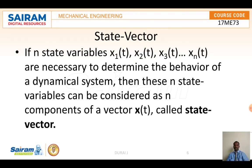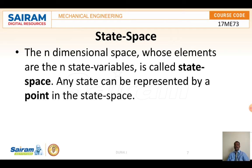Next is the state vector. If state variables x1(t), x2(t), x3(t) up to xn(t) are necessary to determine the behavior of a dynamical system, then these n state variables can be considered as components of a vector x(t) called the state vector. Then comes the state space — the n-dimensional space whose elements are the n state variables is called the state space. Any state can be represented as a point in the state space.